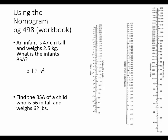Again I need to use a straight edge, and I need to line up both the height and the weight. I'm going to draw a line across, and you can use a sheet of paper across the nomogram in your workbook. From the height of 56 inches to the weight of 62 pounds, this line crosses the body surface area column right at this point. Looking carefully, it looks about 1.06 as the body surface area for this child — so 1.06 meters squared.